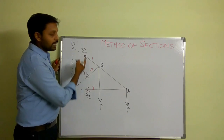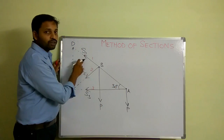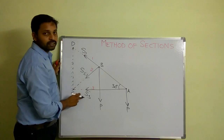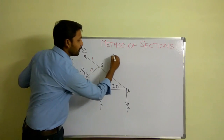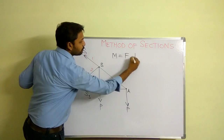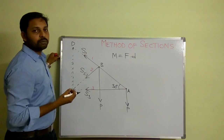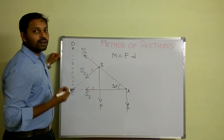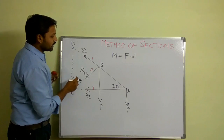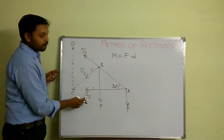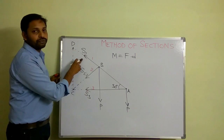If 30 degrees is given in the problem and I want to find S1, I need to eliminate S2 and S3. Moment is force into perpendicular distance, so if the perpendicular distance is zero — that is, if the line of action of a force passes through the moment center — then the moment due to that force is zero. Here S2 and S3 both commonly pass through point C, so if I consider C as the moment center I will be able to find S1.